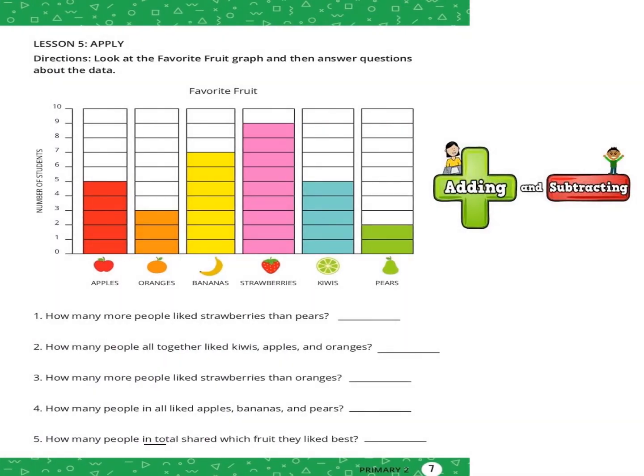Look at the Favorite Fruit graph and answer questions about the data. This bar graph's title is "Favorite Fruit." How many apples? Five. And three oranges, and seven bananas, and nine strawberries, and five kiwis, and two pears.